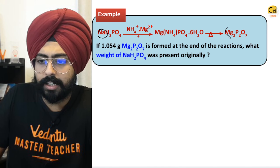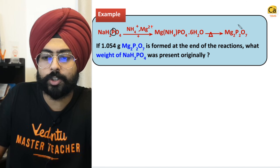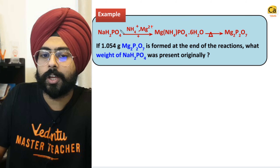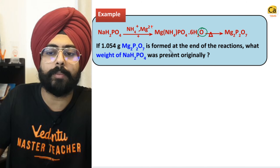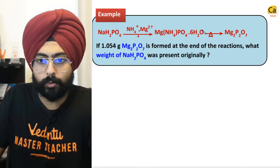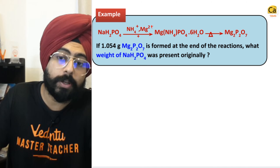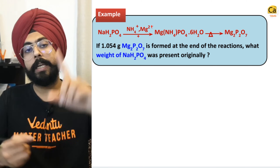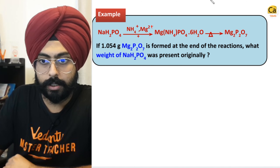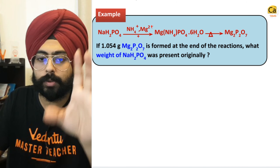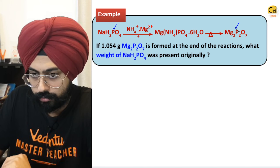Is sodium present in the final mixture? No. Is hydrogen present in the final mixture? No. Is phosphorus present? Yes — phosphorus can be used. Is oxygen present? Yes, but more oxygen is coming in from water during the reaction, so all the oxygen in the final compound is not coming from the initial part. You need to be judicious about which atom to conserve. Let's conserve the phosphorus atoms.